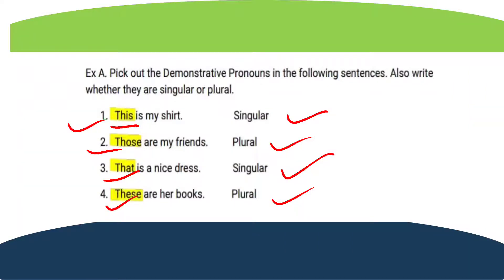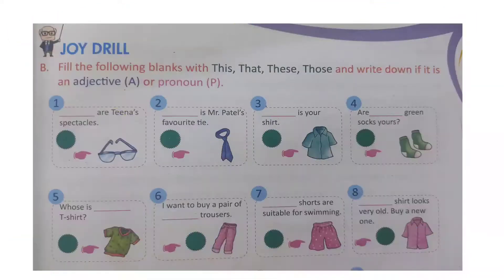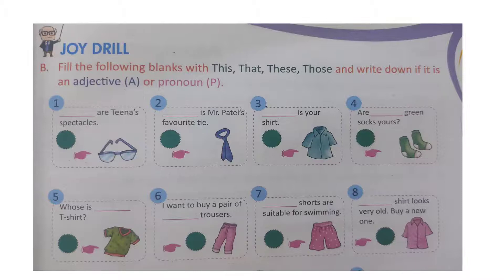I hope you have filled the answers. Now let us move to Exercise B. In Exercise B, you have to fill the following blanks with 'this', 'that', 'these', or 'those', and write down whether it is used as an adjective or pronoun. We have already seen the difference between demonstrative adjectives and demonstrative pronouns in the chapter.